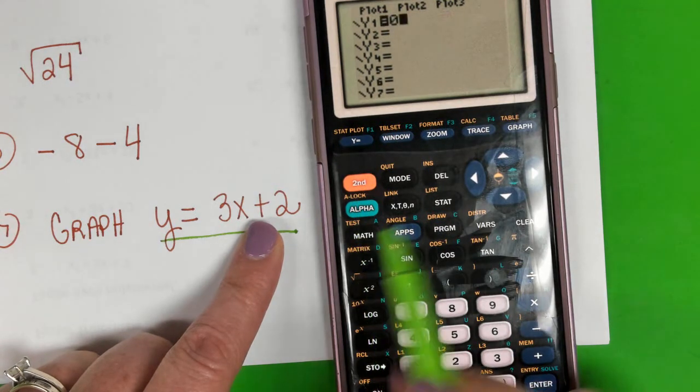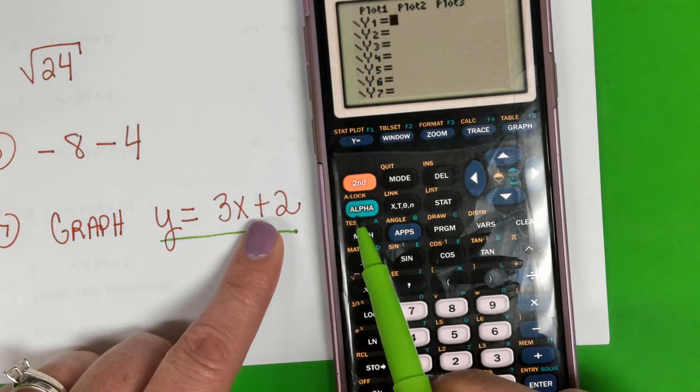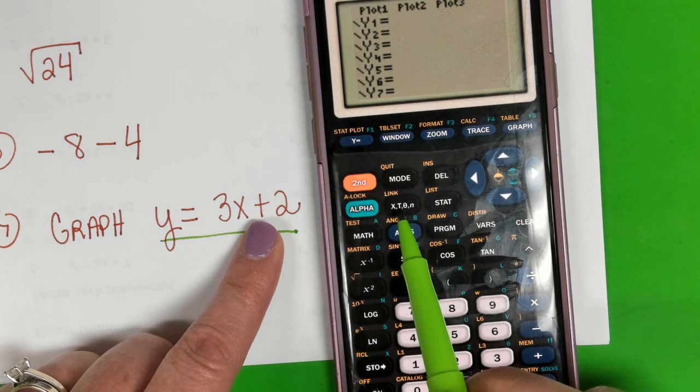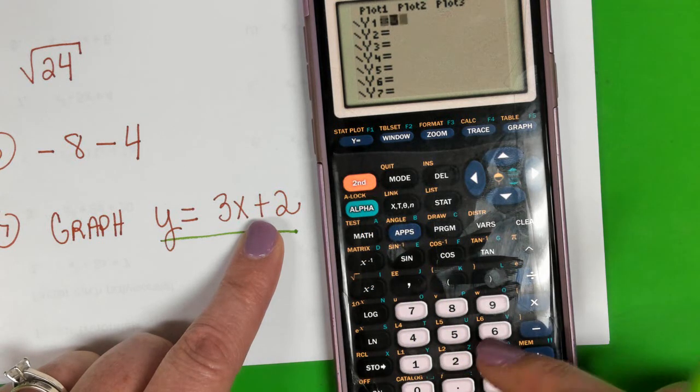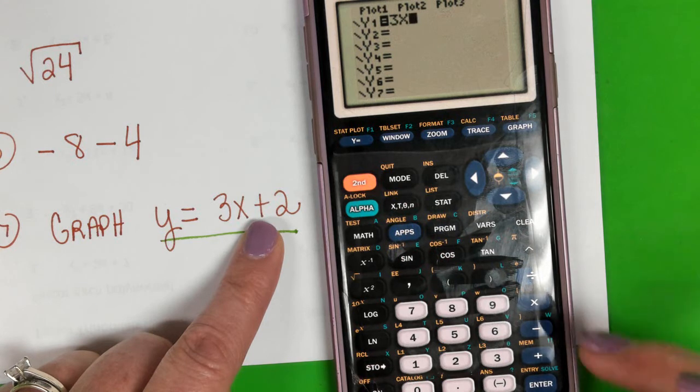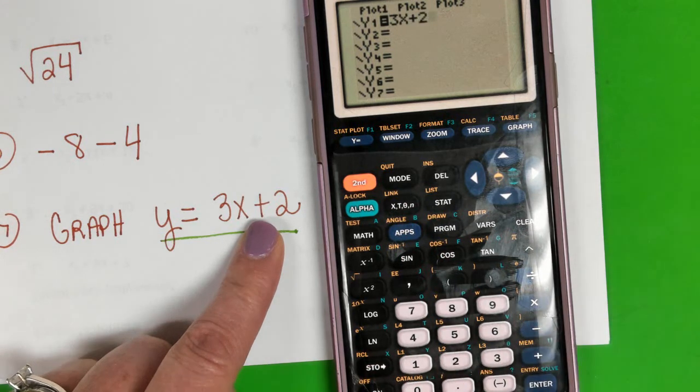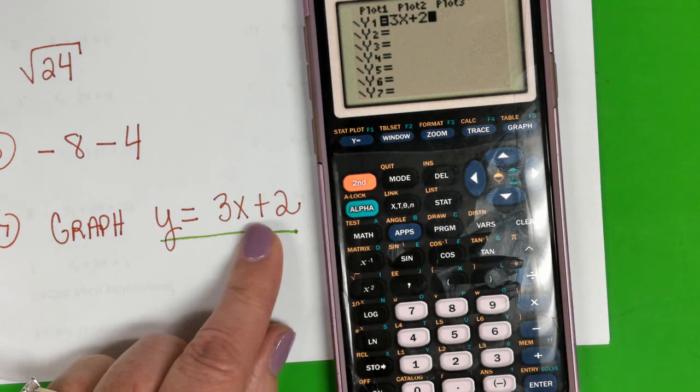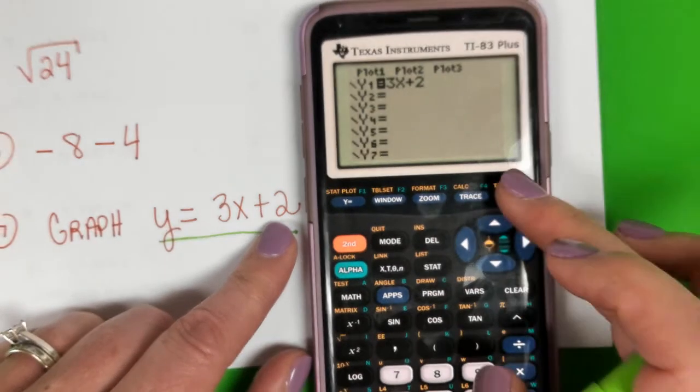Now next to your green alpha key, next to the green alpha key is your variable key, is your x key. So I'm going to type in 3x + 2, so you don't have to type the y part, just the 3x + 2. Now this is really cool. Now let's look at the graph.